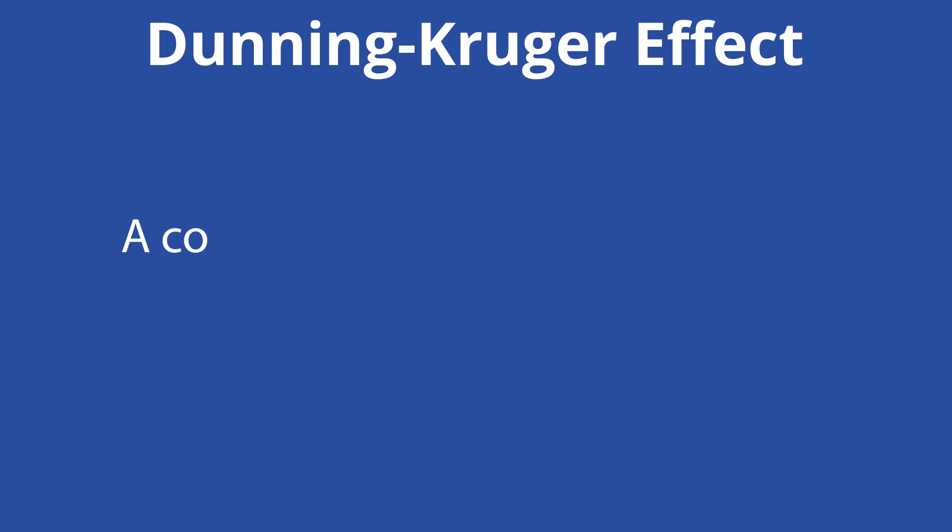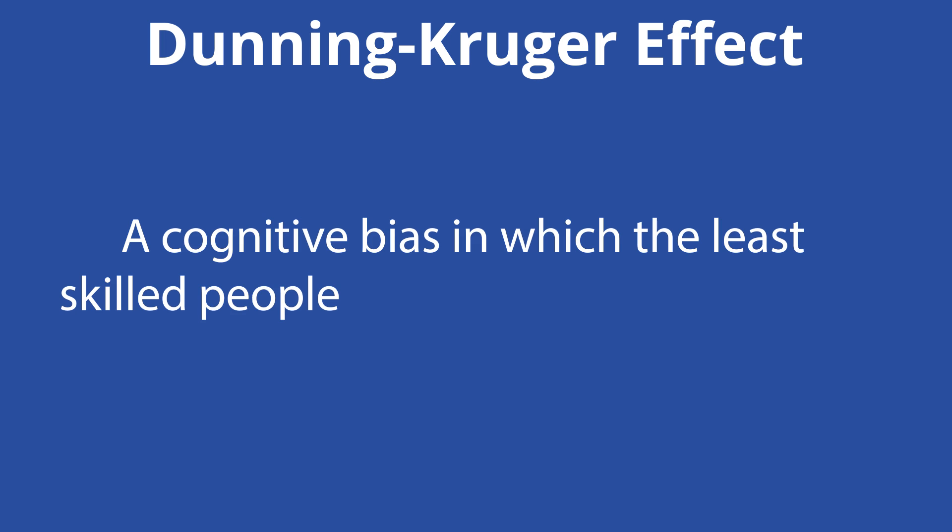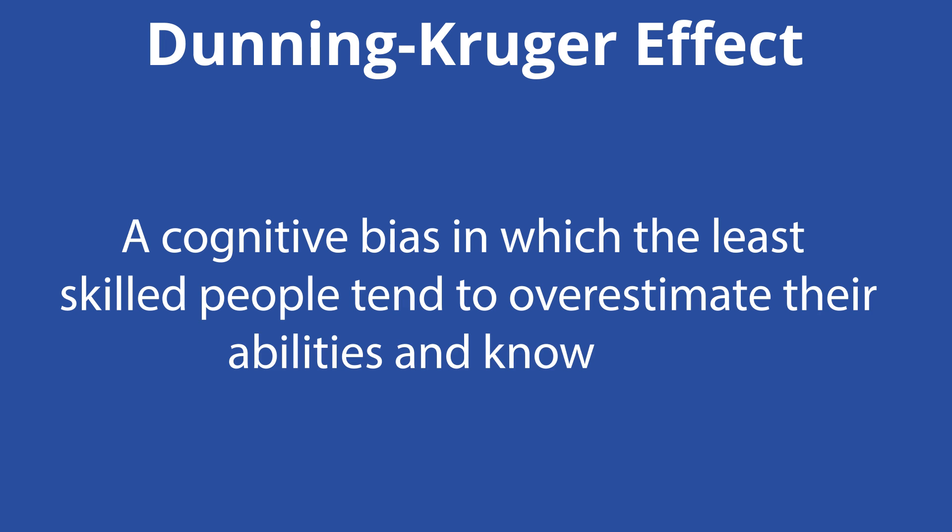The Dunning-Kruger Effect is a cognitive bias in which the least skilled people tend to overestimate their abilities and knowledge. This phenomenon results when people lack intellectual humility and awareness of the limitations of one's reasoning abilities and one's biases. The Dunning-Kruger Effect can also be linked to a hiccup in metacognition, which is the idea of actively thinking about one's thoughts and analyzing them.